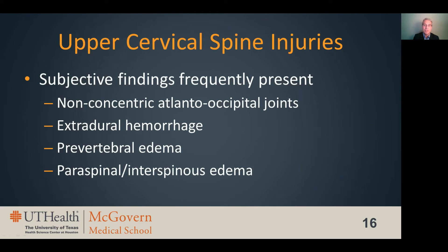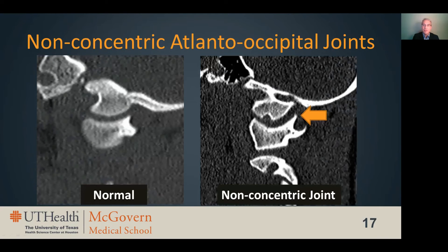In patients without gross malalignment, close inspection for subjective findings of cranial cervical injury can be very helpful in making the diagnosis. In our institution's study of pediatric patients with cranial cervical junction injuries, we found over 90% had at least one of four subjective findings. Non-concentric appearance of the atlantooccipital joints is a fairly common finding, present in almost two-thirds of patients. Because the head tends to slide forward in cranial cervical injuries, you will often see widening of the posterior aspect of the atlantooccipital joint compared to the anterior aspect, even when the joint space measures less than the 2.5 millimeter cutoff.